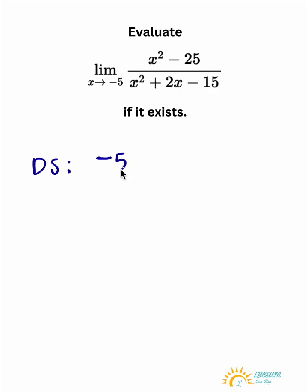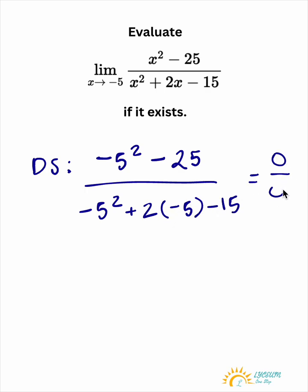And when we do that, we get negative 5 squared minus 25 over negative 5 squared plus 2 of negative 5 minus 15. And this gets us 0 over 0,